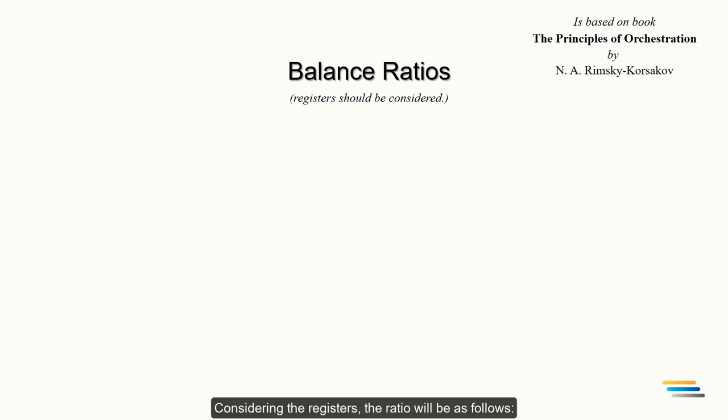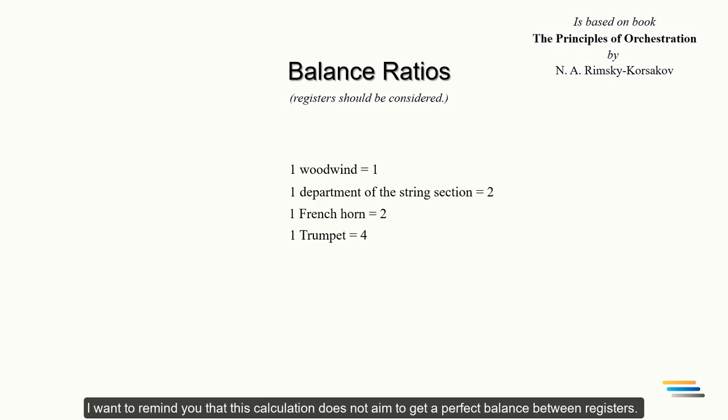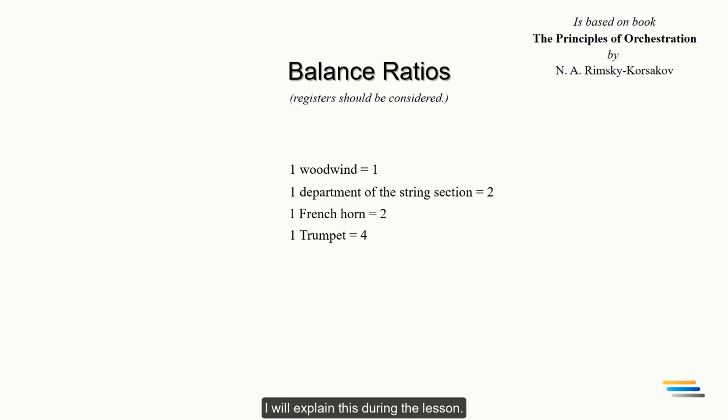Considering the registers, the ratio will be as follows. One woodwind instrument is equal to 1. One department of the string section will be indicated with 2. One French horn is also equal to 2. One trumpet will be indicated with 4. I want to remind you that this calculation doesn't aim to get a perfect balance between registers. On the contrary, the presented calculation model will help you to hear which instruments or registers are strong or weak before their live performance. I will explain this during the lesson.